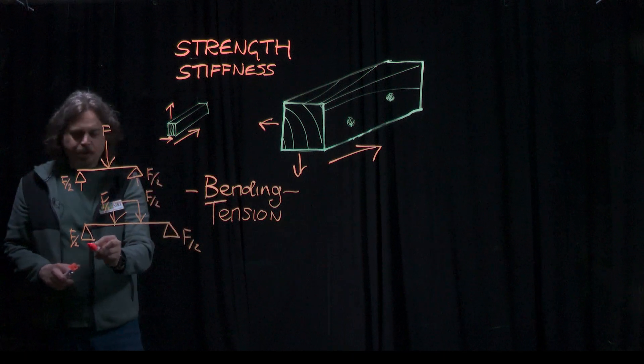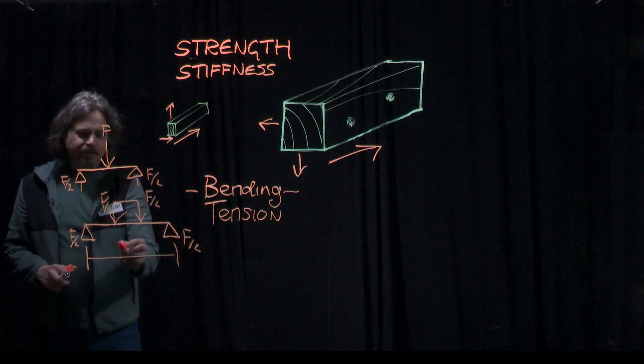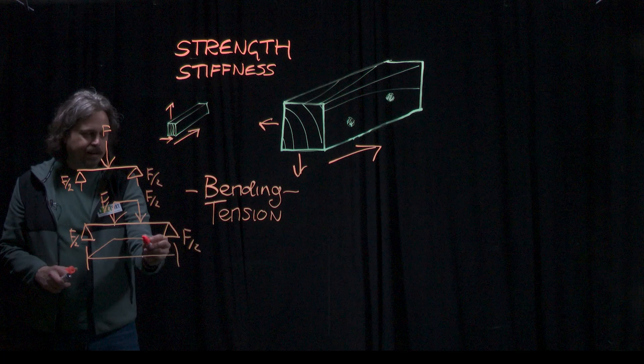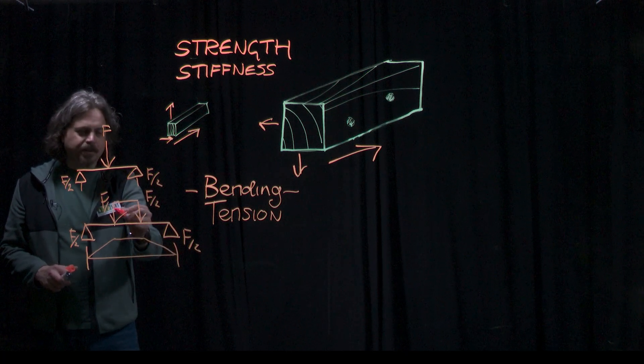So in the central portion of the four-point bending test, we have pure bending. Drawing the bending moment diagram, it looks like that with uniform bending in between these two points.